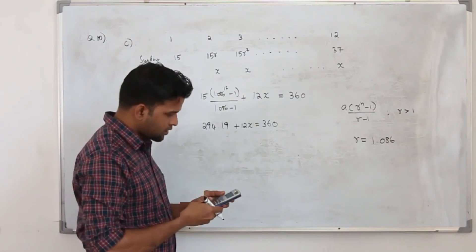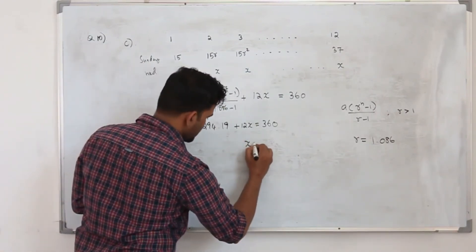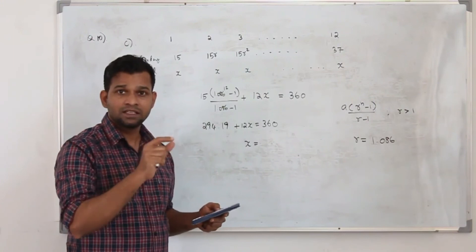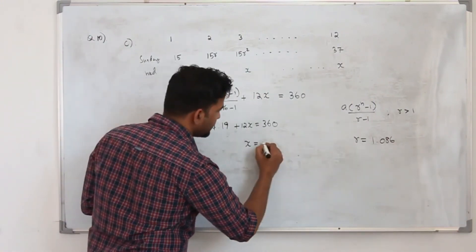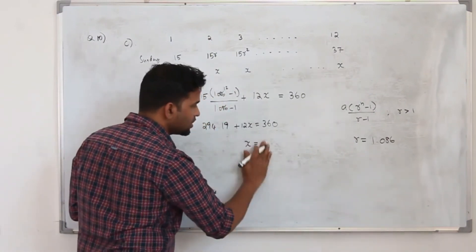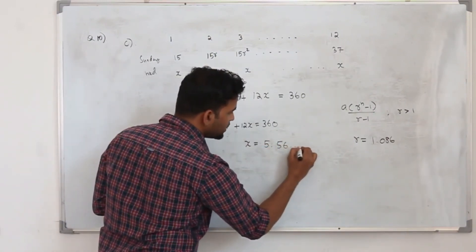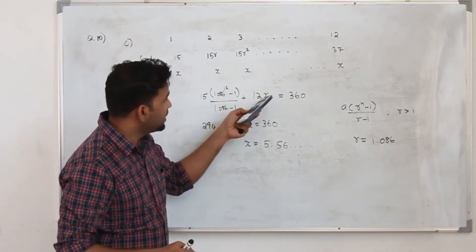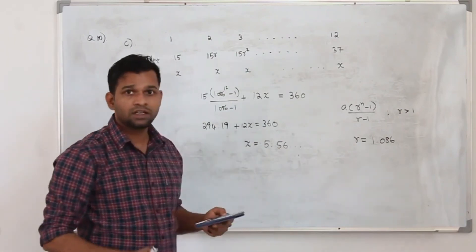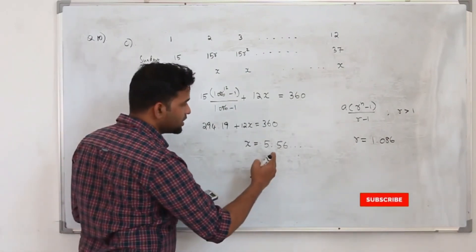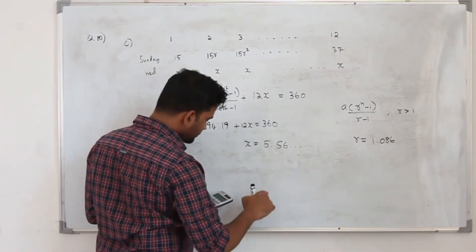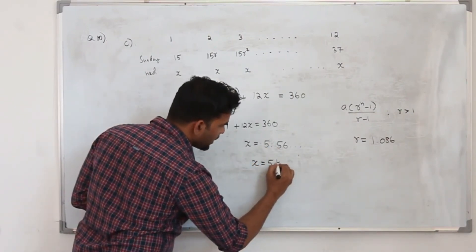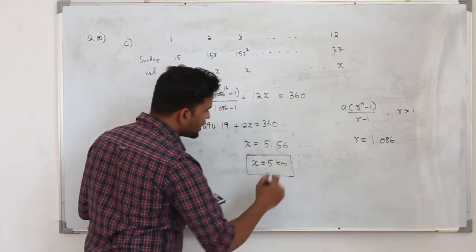Solving for x gives approximately 5.48. Since x must be an integer and the total must not exceed 360, we round down — not up — because rounding to 6 would exceed 360 km. Therefore x equals 5 km is the maximum value of x under training plan B.